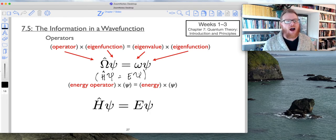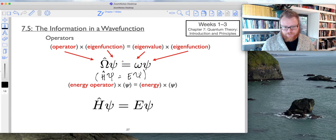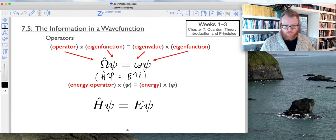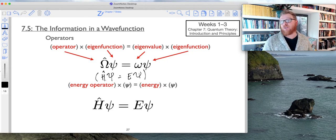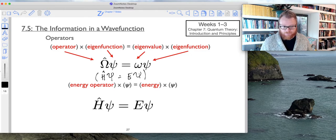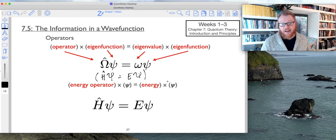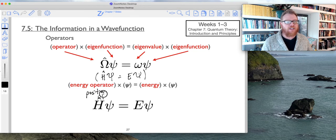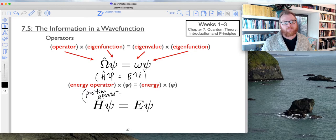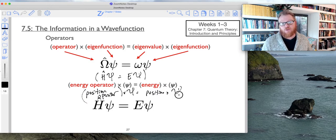The way this works, the operator operates on the eigenfunction, and what we get out of it is the eigenvalue and the original wave function. If we used the Hamiltonian total energy operator, then the eigenvalue we get out is the energy. For example, energy operator operates on psi returns energy. Or if I did the position operator operating on psi, that would return to me the position and the original wave function.